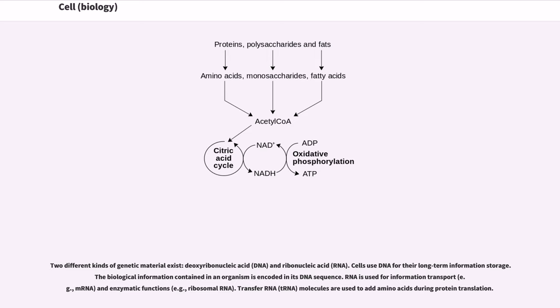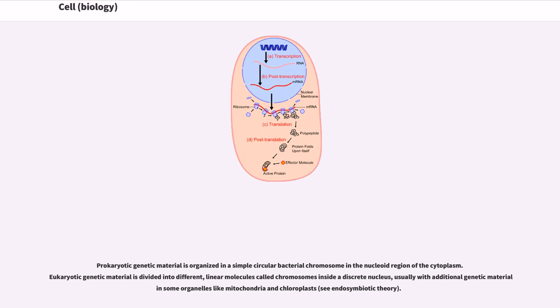Cells use DNA for their long-term information storage. The biological information contained in an organism is encoded in its DNA sequence. RNA is used for information transport, for example mRNA, and enzymatic functions, for example, ribosomal RNA. Transfer RNA molecules are used to add amino acids during protein translation.